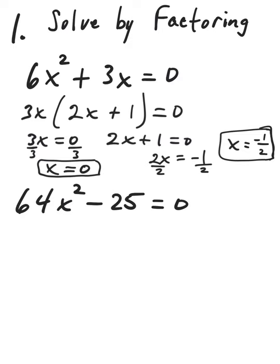Now, there are times when it's the same solution repeated, like you may get a 2 both times, but there's still going to be two answers. Our second example, 64x squared minus 25, this is a difference of two squares.